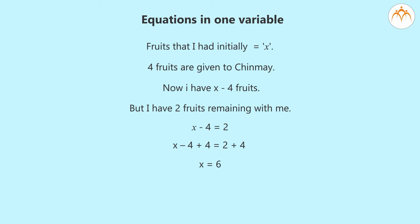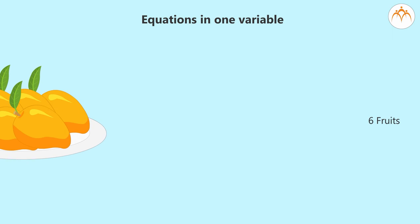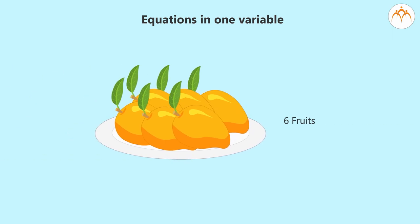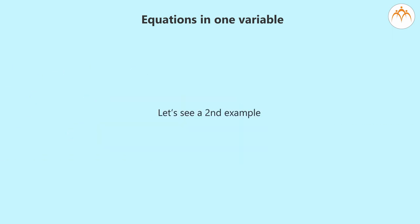We showed the number of fruits I had in the beginning by the variable X. Using the given information we obtained the equation X minus 4 equals 2. When we solve this equation we got the answer that the number of fruits was 6. Now let us see a second example.